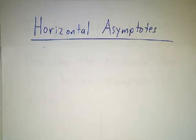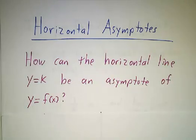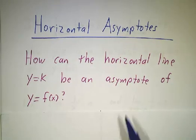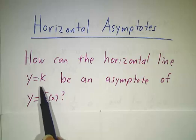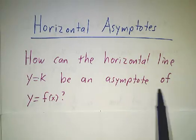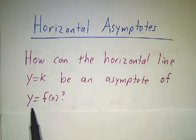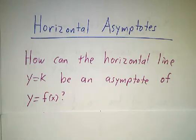In a previous video, we talked about vertical asymptotes. Now we're going to talk about horizontal asymptotes. The question is: if somebody gives you a horizontal line — and every horizontal line is y equals k — how can that be an asymptote of the graph of f, the graph y equals f?